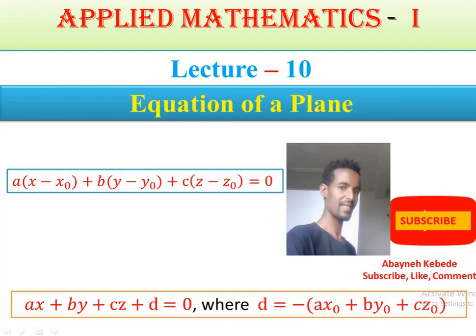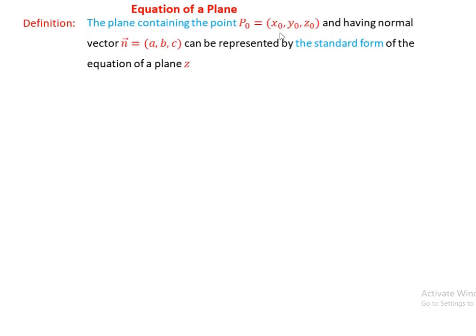What does the equation of a plane look like? What is the standard form and the general form of the equation of a plane? If there is a given point and a normal vector, what does the equation of a plane look like? And if we have three points, how can we construct or find the equation of such a plane? Welcome to the Applied Mathematics lecture on equation of a plane. The plane containing the point P-naught with components x-naught, y-naught, z-naught and having a normal vector n with components a, b, c can be represented by the standard form of the equation of a plane.